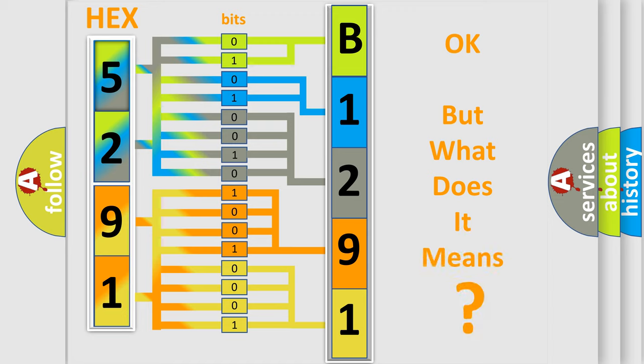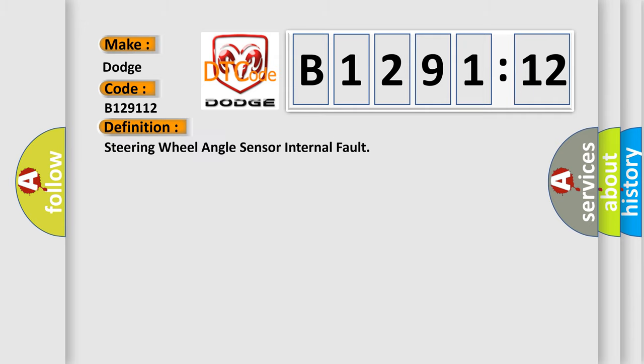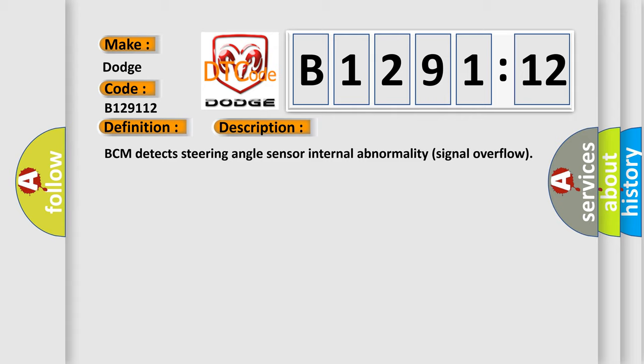The number itself does not make sense to us if we cannot assign information about what it actually expresses. So, what does the diagnostic trouble code B129112 interpret specifically for Dodge car manufacturers? The basic definition is steering wheel angle sensor internal fault. And now this is a short description of this DTC code.